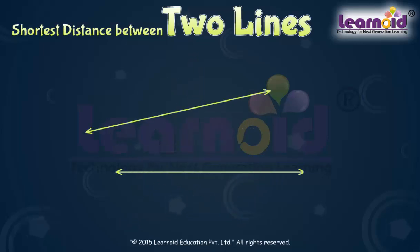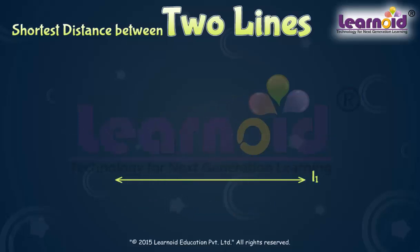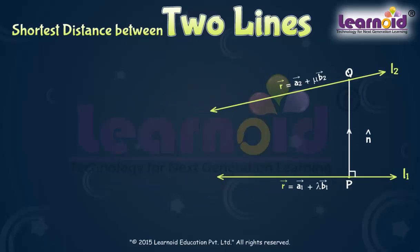For skew lines, the line of shortest distance will be perpendicular to both the lines. Let L1 and L2 be two skew lines with equations: vector R equals A1 vector plus lambda B1 vector, and R equals A2 plus mu B2. If PQ vector is the shortest distance between L1 and L2, then it is perpendicular to both B1 and B2. The unit vector along this direction is n-cap equals B1 vector cross B2 vector divided by the modulus of B1 cross B2.